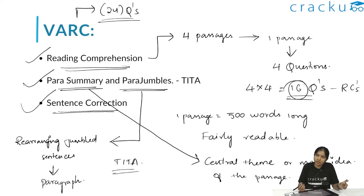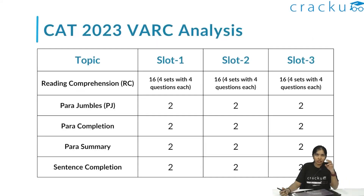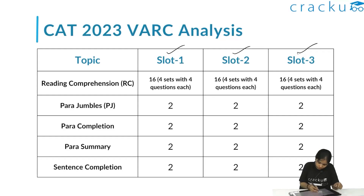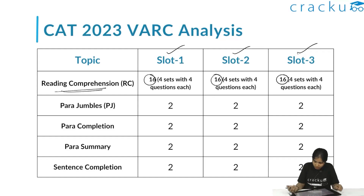You'll also be tested with some sentence correction questions. Now let's look at the section-wise weightage of VARC in CAT 2023 across slot 1, slot 2, and slot 3. Reading Comprehension consistently had 16 questions in all three slots — that is four sets with four questions each.